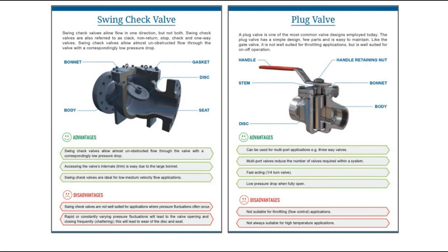Plug valves are one of the most common valve designs employed today. The plug valve has a simple design, few parts, and is easy to maintain. Like the gate valve, it is not well suited for throttling applications but is well suited for on-off operation. The parts include the handle, stem, disc, bonnet, body, and handle retaining nut. Advantages include use for multi-port applications such as three-way valves, which reduces the number of valves required in a system. It is a fast-acting quarter-turn valve with low pressure drop when fully open, but again not suitable for throttling or high temperature applications.